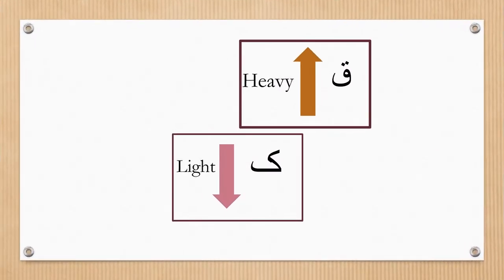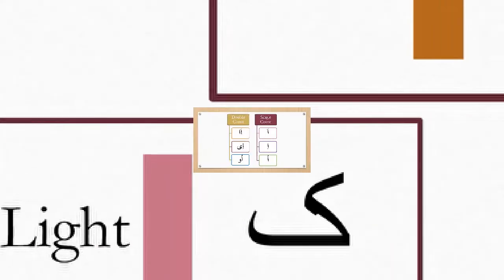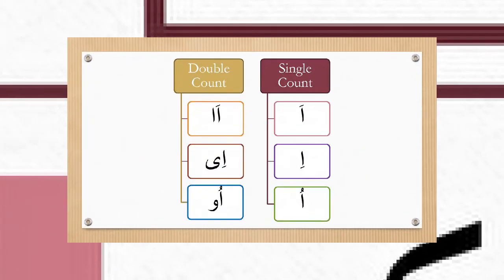Now, back to qaf and kaf — let's learn to differentiate between the two sounds. The first one was a heavier sound, whereas the second one was lighter. Let's look into some examples.